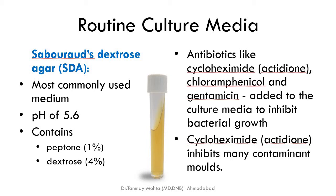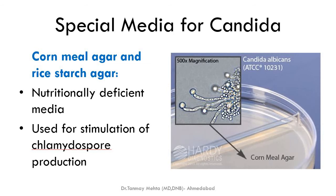After microscopy, we move to culture. The most commonly used fungal culture medium is Sabouraud Dextrose Agar (SDA). Its pH is very acidic at 5.6, because most bacterial contaminants do not grow at this pH. Antibiotics like cycloheximide, chloramphenicol, and gentamicin are added to further inhibit bacterial growth. SDA also contains 1% peptone and 4% dextrose. Note that cycloheximide may also inhibit some fungi, so it is avoided when growing those species.